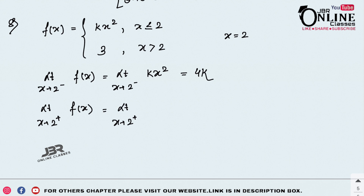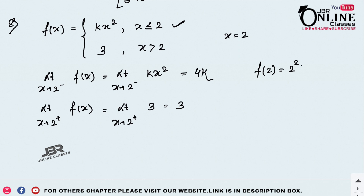For the right-hand limit as x → 2⁺, the function equals 3. Also f(2) = k · 2² = 4k. For continuity, 4k = 3, so k = 3/4. That is your answer.